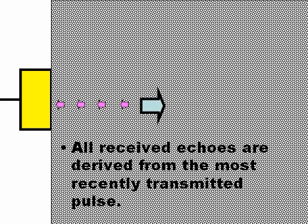Another assumption is that all echoes are coming from the last pulse. This is not always true — sometimes echoes are received that were not produced by the last pulse.